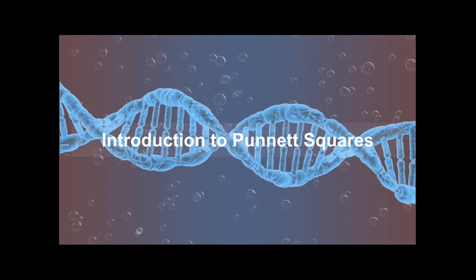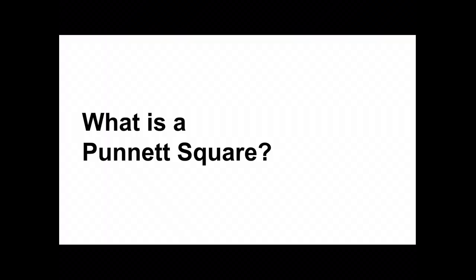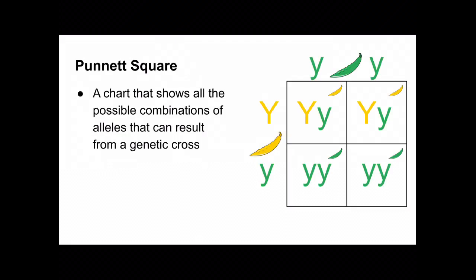Introduction to Punnett squares. What is a Punnett square? A Punnett square is a chart that shows all the possible combinations of alleles that can result from a genetic cross.